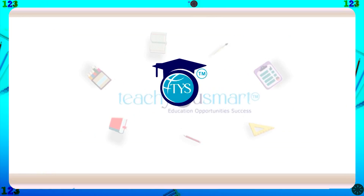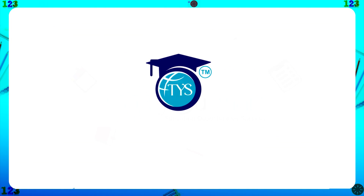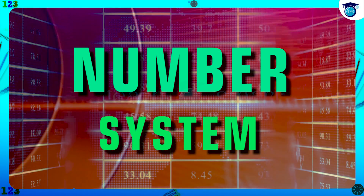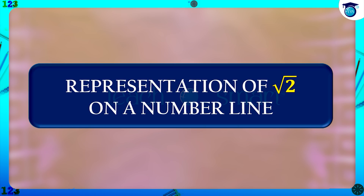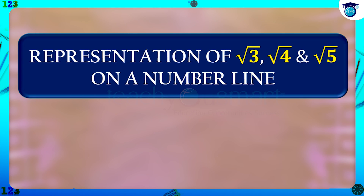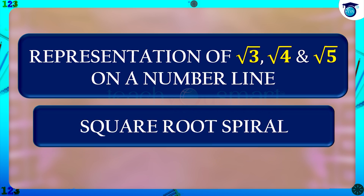Hello students, welcome to Teach You Smart. Let's continue our journey through the number system. In the last session we learned how to represent root 2 on a number line. Today let's study the representation of root 3, root 4, and root 5 on a number line, and also discuss the square root spiral.